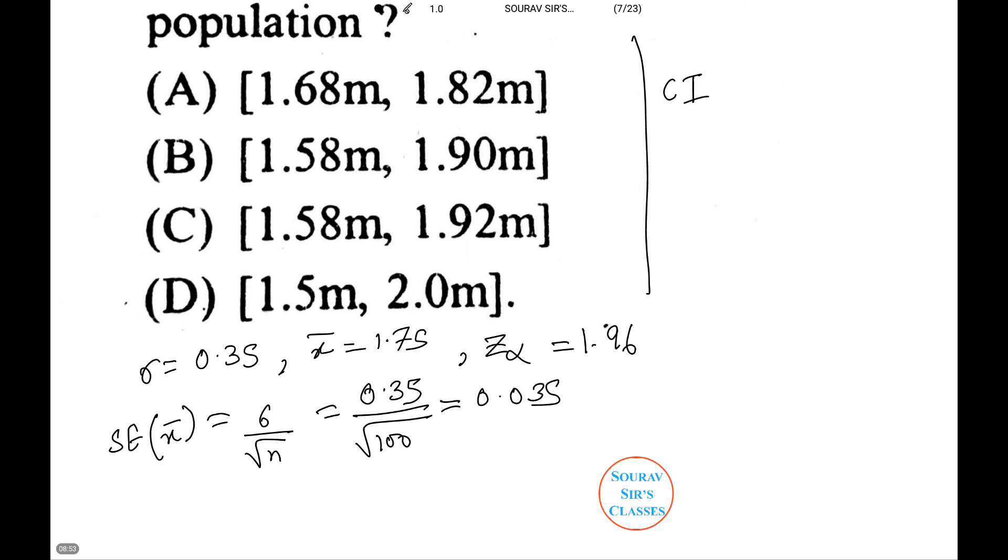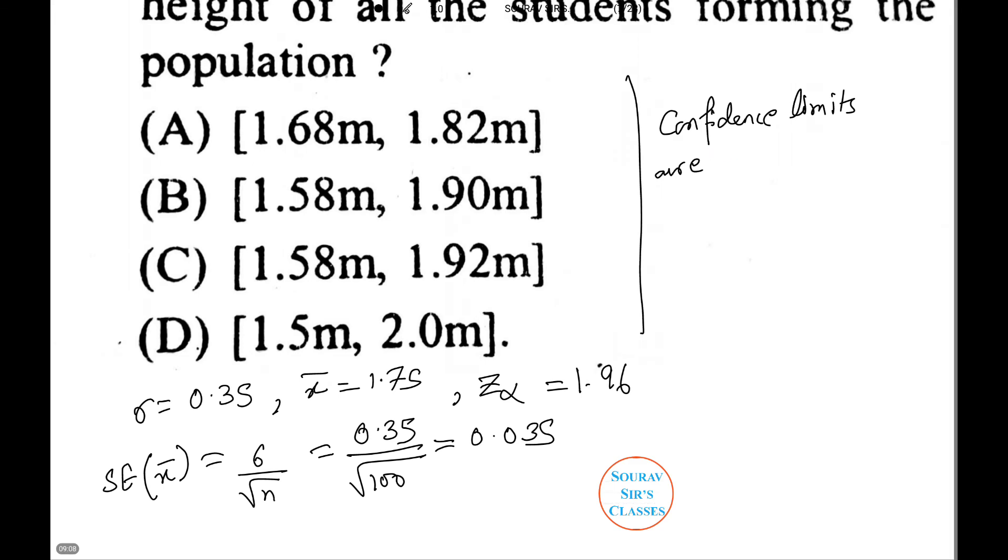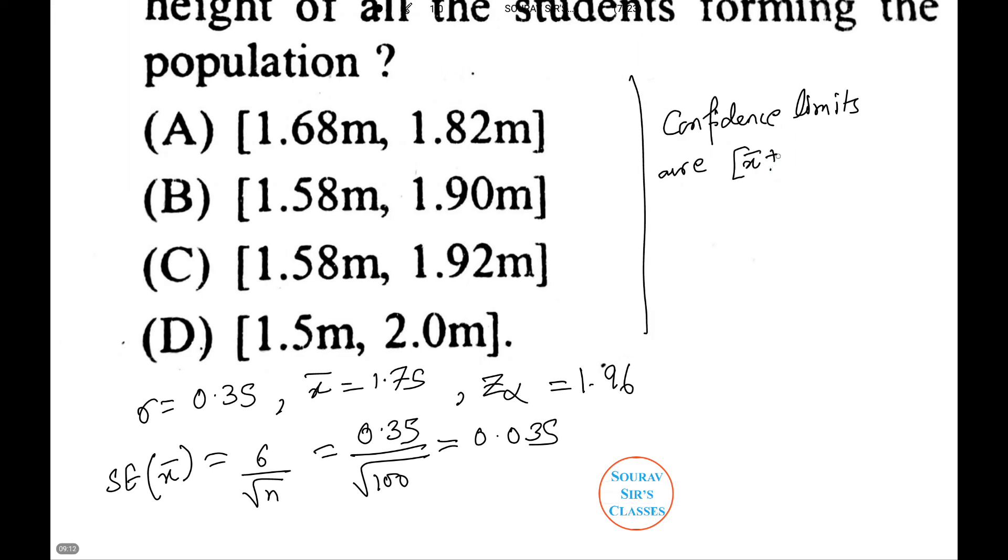Therefore, the confidence limits are x̄ ± z_α/2 × SE(x̄) = 1.75 ± 1.96 × 0.035 = 1.75 ± 0.0686, which equals 1.68 meters and 1.82 meters. Thus option A is the correct answer.